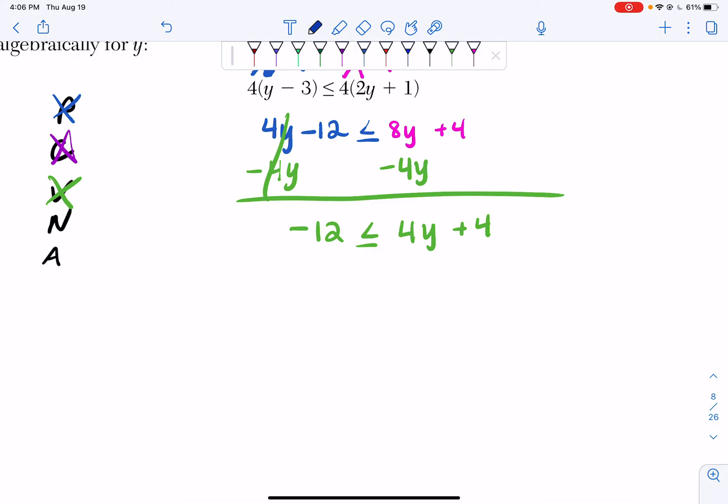So to get rid of that positive 4, I'm going to subtract 4 from both sides of my inequality. I have to ask myself what negative 12 minus 4 is. Well, it's a negative 16.